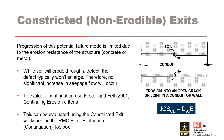To evaluate the likelihood of the soil being able to continue erosion through the defect, the defect opening size is evaluated similarly to a filter opening size. The joint opening size is compared to the D95 of the adjacent soil. If the joint opening size is greater than the D95, the probability of continuation is 1.0. If it is less, the probability of continuation can be determined using the constricted exit worksheet in the RMC filter evaluation toolbox for continuation.